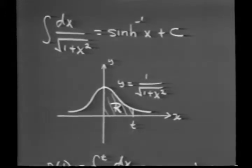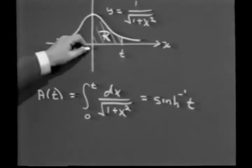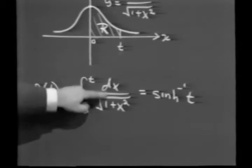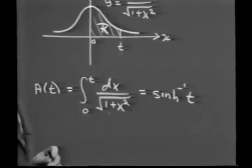The area of the region R, which is a function of t, is given by what? The definite integral from 0 to t dx over the square root of 1 plus x squared.